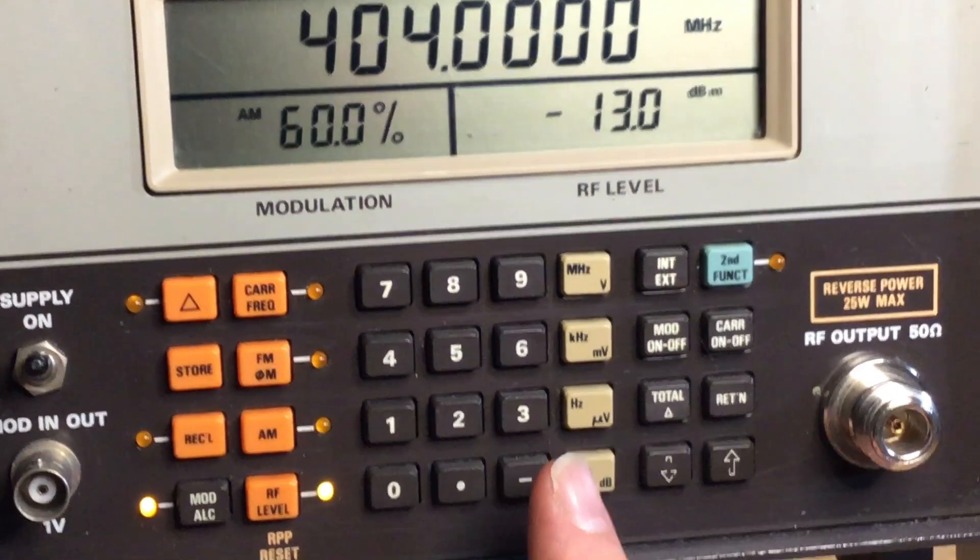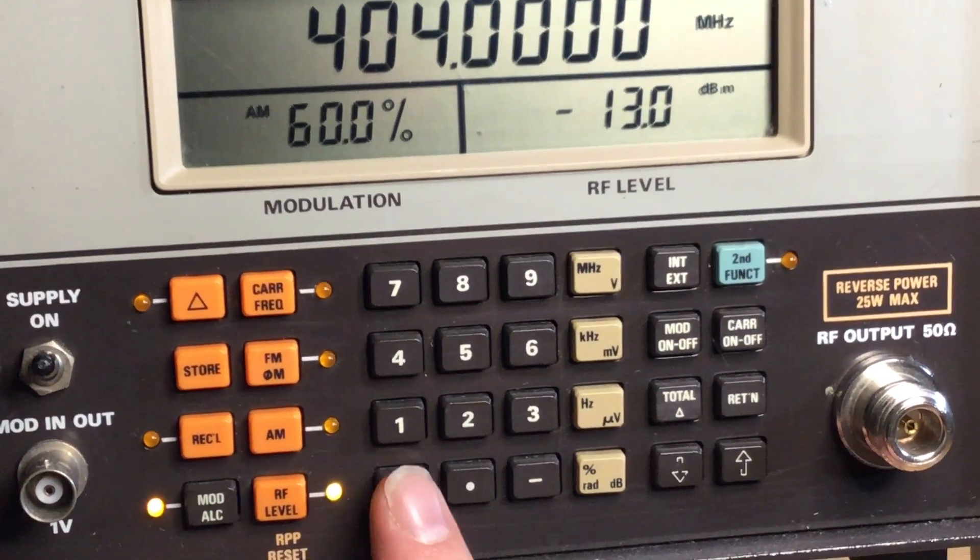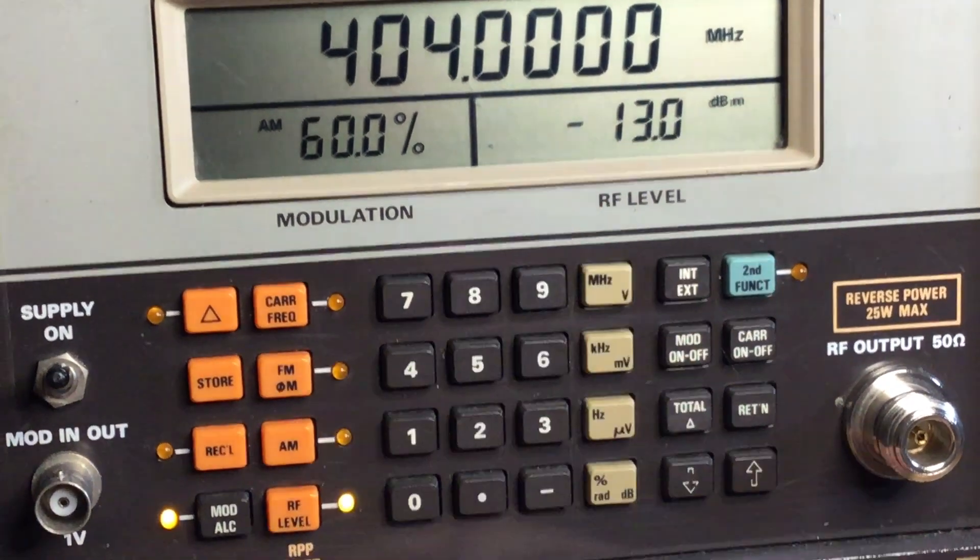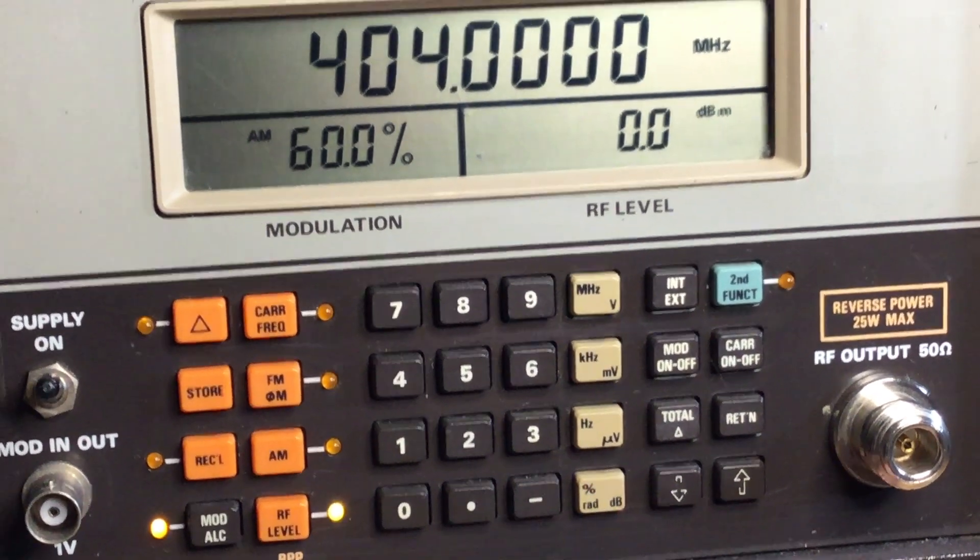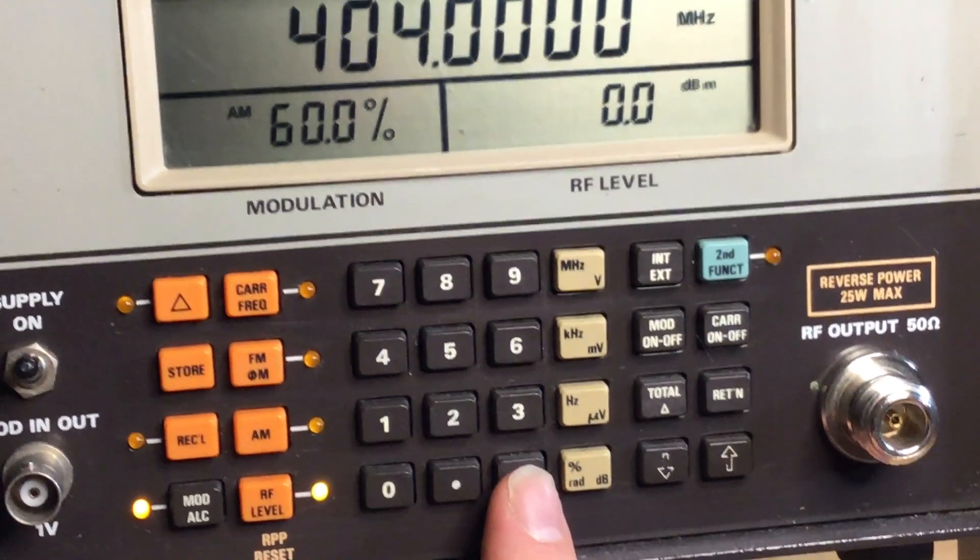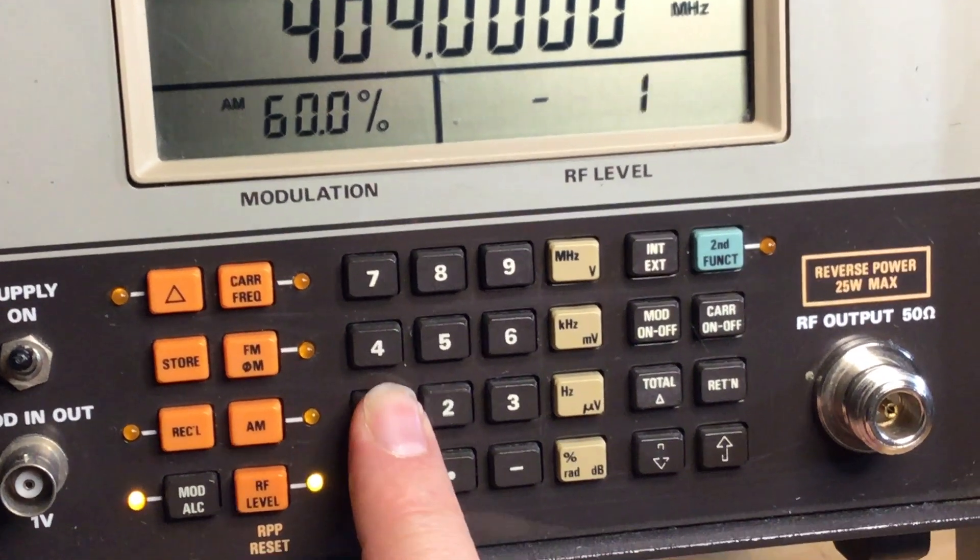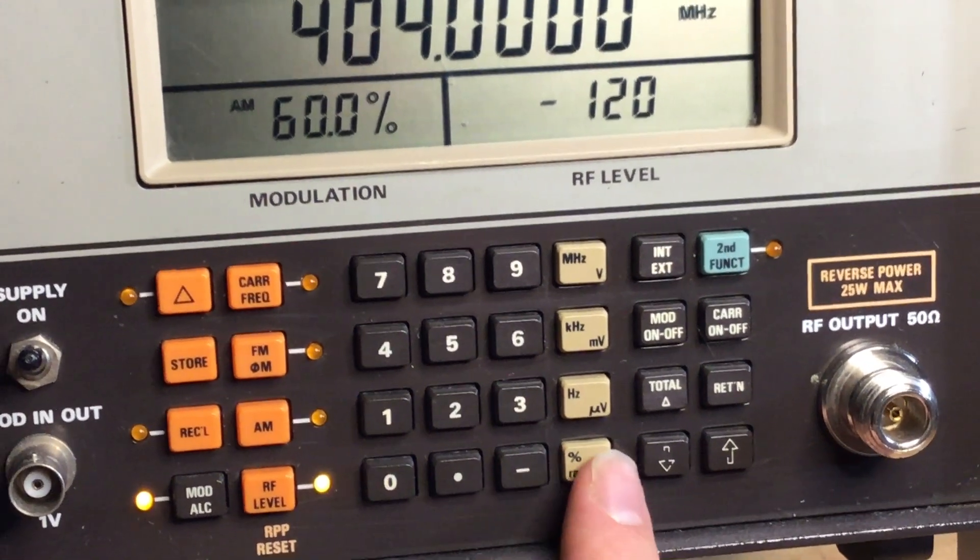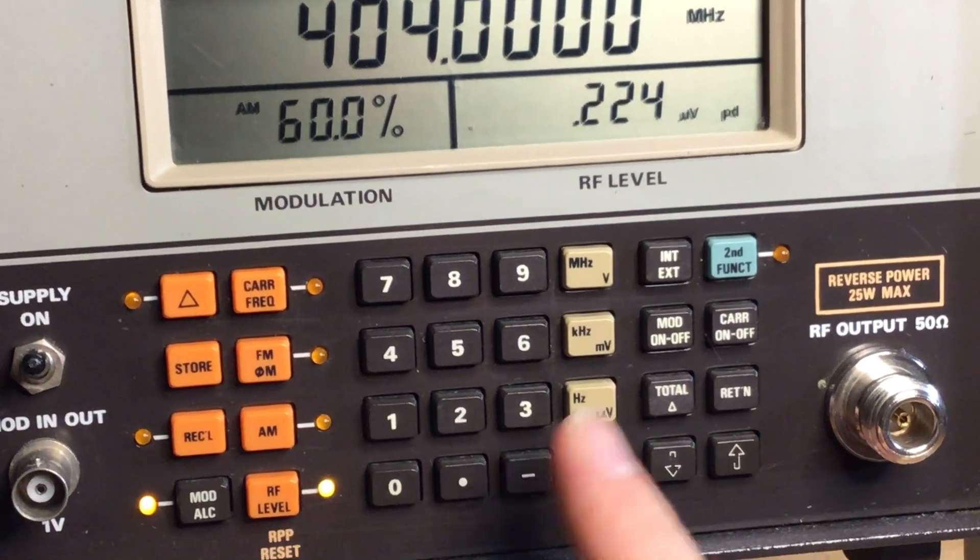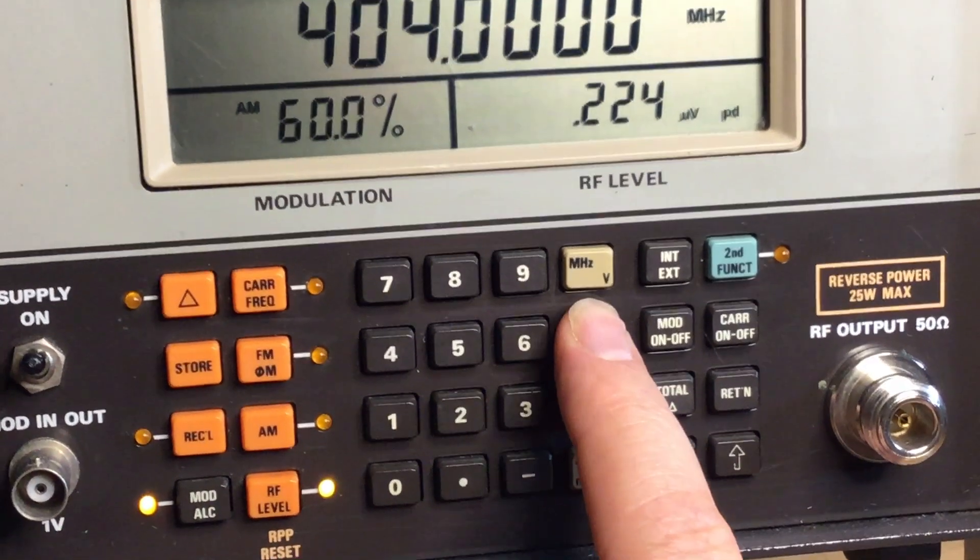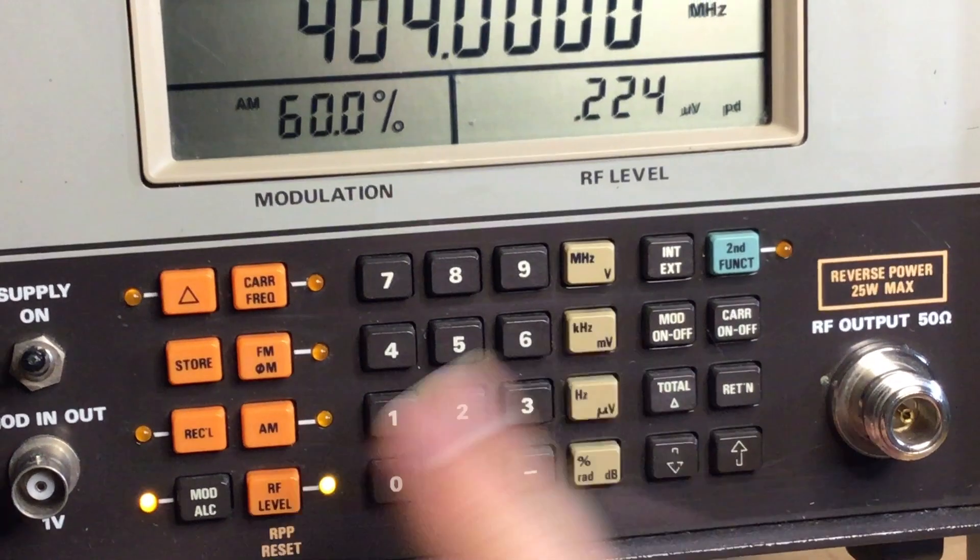Using the up and down buttons you can put in a level if you wish, because the RF level is displayed here. You can put in zero dBm for example, or you can type in a level like minus 120 dBm. You can have that converted into microvolts, millivolts, and volts as well, depending on what level you obviously set.